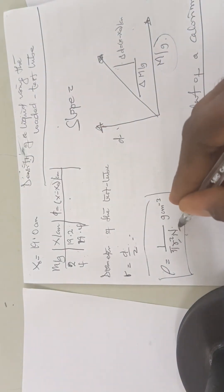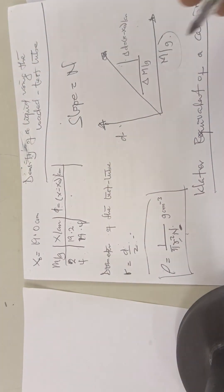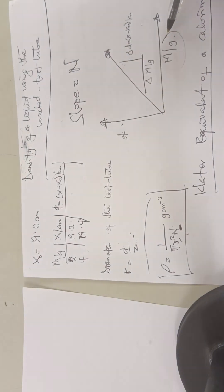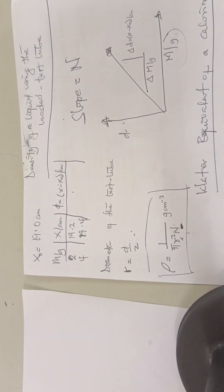The slope is our n, so we put the value of the slope here, and then we put the value of the radius here to find our density.